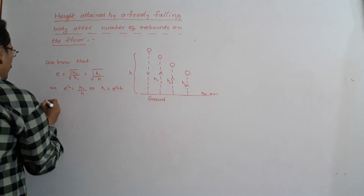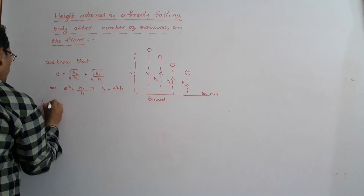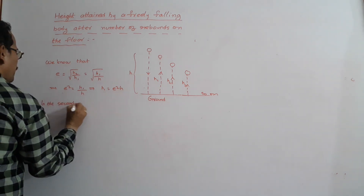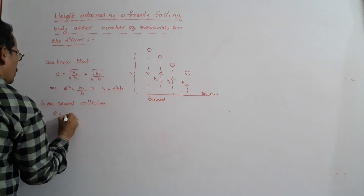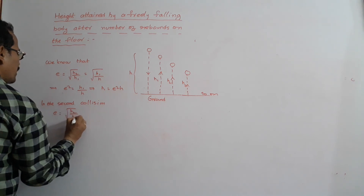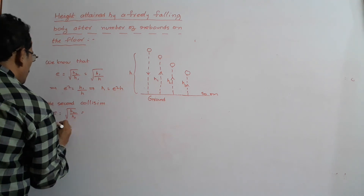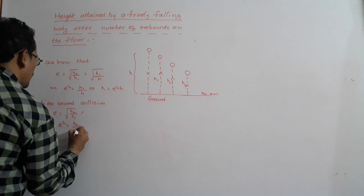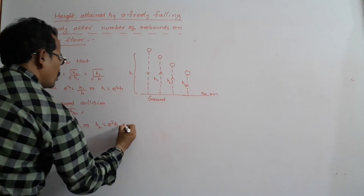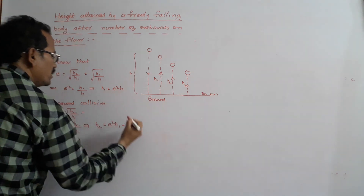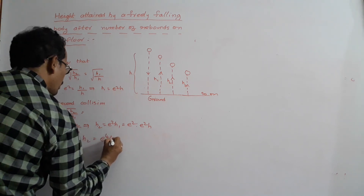Next, I find H2. In the second collision, E is equal to the square root of H2 by H1, so E squared equals H2 by H1, which implies H2 equals H1 times E squared. Since H1 is equal to E squared H, H2 is equal to E to the power 4 times H.